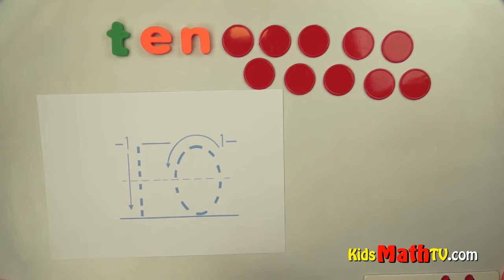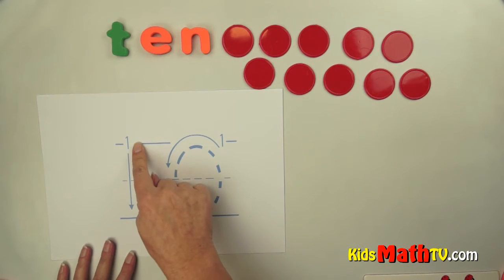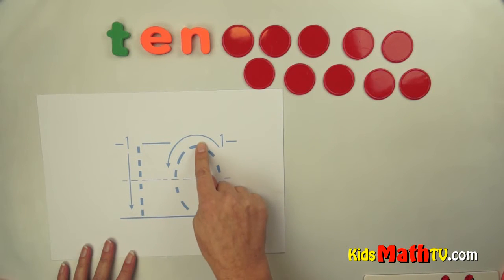To write the number 10 it's actually two numerals to make this one number, 10. We make a 1, which is just a simple straight line down, and a 0. We start here, we go around, all the way around and back up.